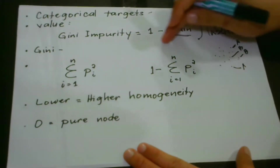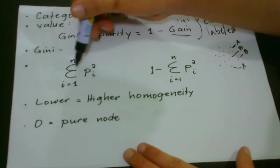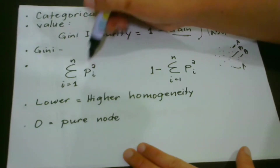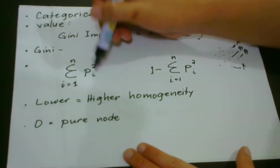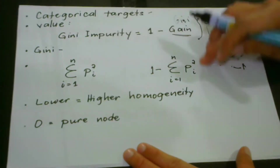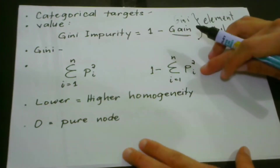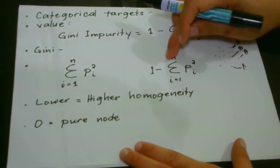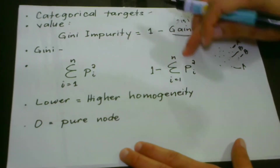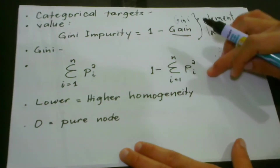The way to compute Gini is as follows: we take the summation of the squared probability of each element i. And to compute for the Gini impurity, we have 1 minus the summation of the squared probability of each element.